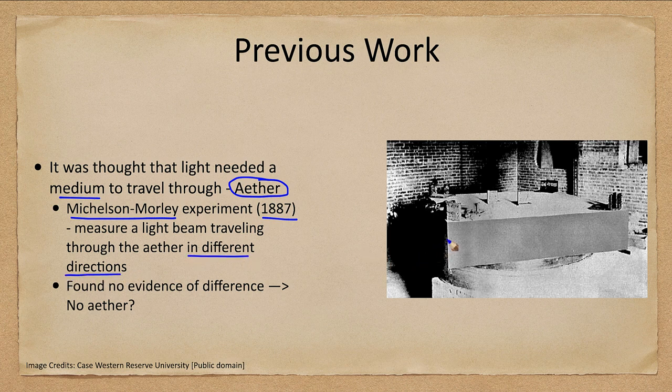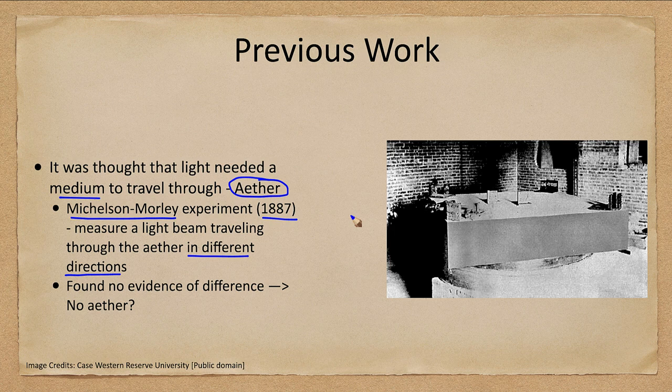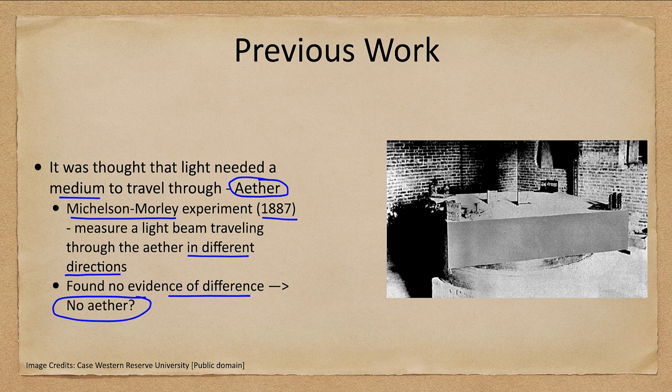The light beam was split so that some would travel perpendicular to the ether and some parallel to it. There should have been a difference in travel times, but no difference was found, meaning there was no ether. We now know that light does not need a medium through which to travel.